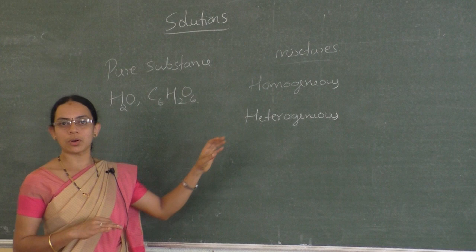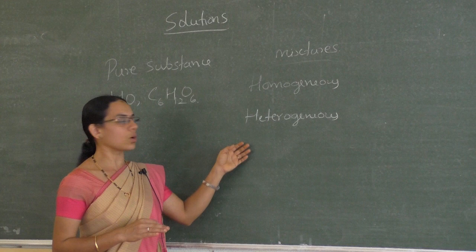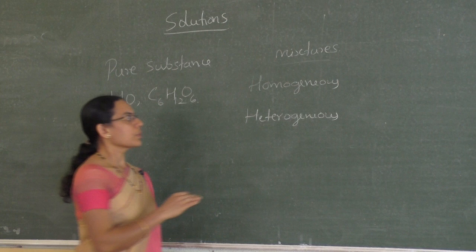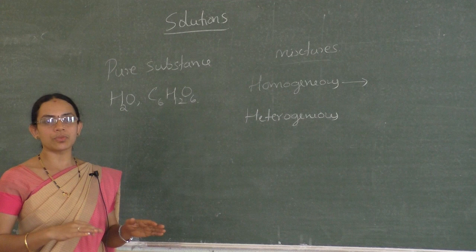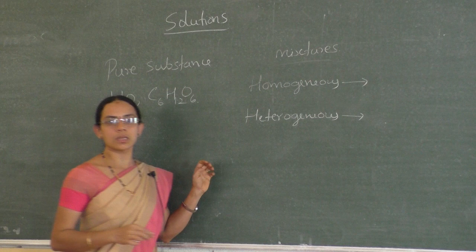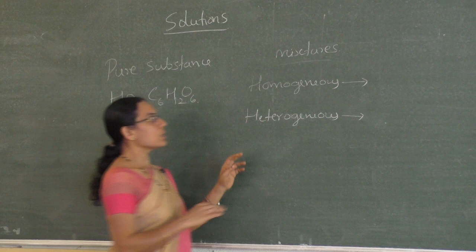Examples of homogeneous mixtures: salt and water or sugar and water. Heterogeneous mixtures: mixture of sand and water or oil and water. Solutions are the mixtures in which the two components completely mix with each other and the concentration is uniform throughout the mixture. Our topic, solution, is a homogeneous mixture.